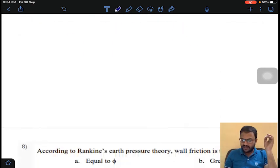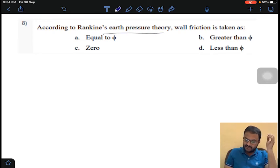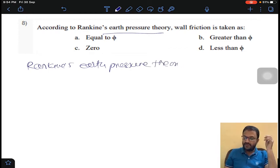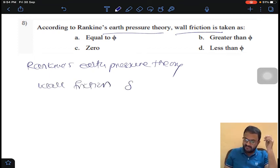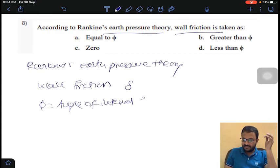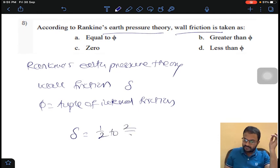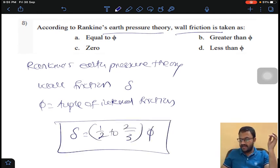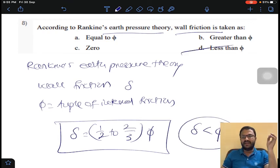Coming to question number 8 of the assignment, according to Rankin's earth pressure theory, wall friction symbol is delta and phi is angle of internal friction. The relationship between delta and phi taken by Rankin is delta equals half to two-thirds phi. So delta is less than phi. Option D for question number 8.